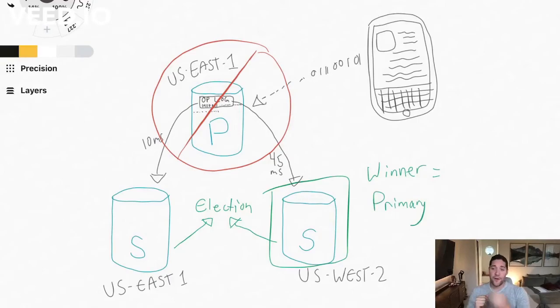The connection string handles all the logic for routing in MongoDB. So from the perspective of the application, this whole election process is seamless, and again, all of this takes place in a matter of seconds.